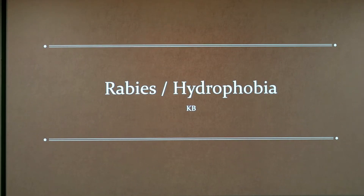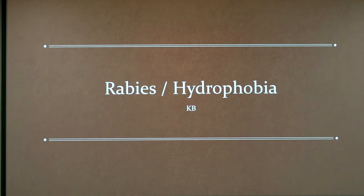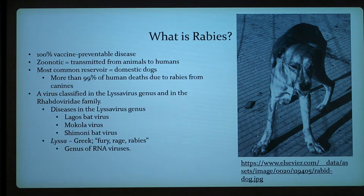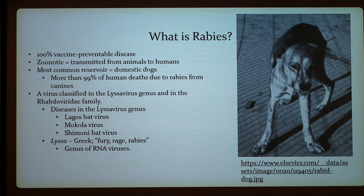My presentation is about rabies, or the older term hydrophobia — which is incorrect because they're not really afraid of water, they just can't drink it because it hurts to swallow. Rabies is a 100% vaccine-preventable disease and it's zoonotic, meaning it can be transferred from animal to human. The most common reservoir is domestic dogs, with more than 99% of human deaths due to rabies coming from canines.